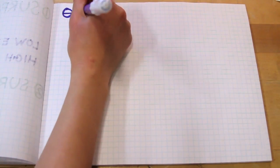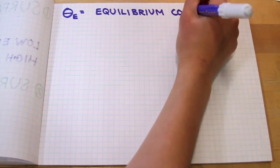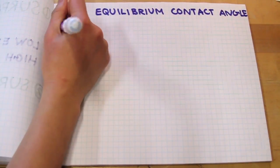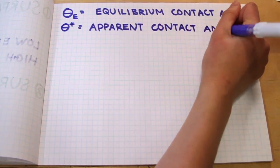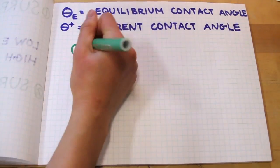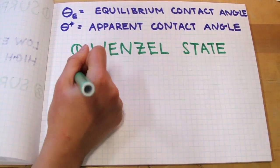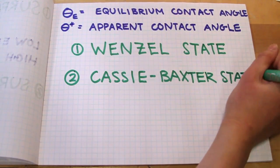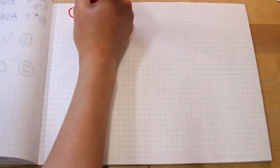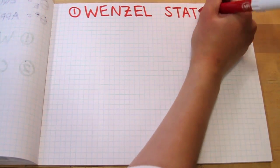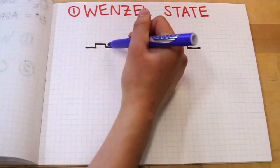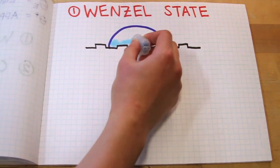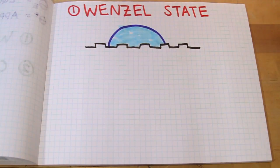There are two different states a water droplet can be in when it contacts a rough surface. We'll call theta_e the equilibrium contact angle for an ideal flat surface, and theta* the apparent contact angle on a rough surface. These two models were developed by Wenzel and by Cassie-Baxter. In the Wenzel state, there are no air bubbles underneath the droplet — the droplet is in complete contact with the surface, sticks very well, and is called a pinned droplet.